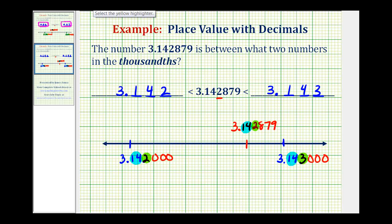And if we go one more place value, notice how here we have an eight in the ten thousandths place value, but here we have a zero, which means this number here must be less than the given number.